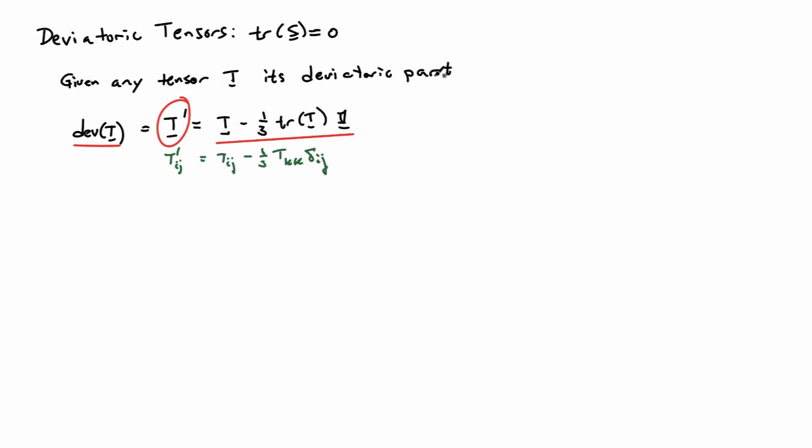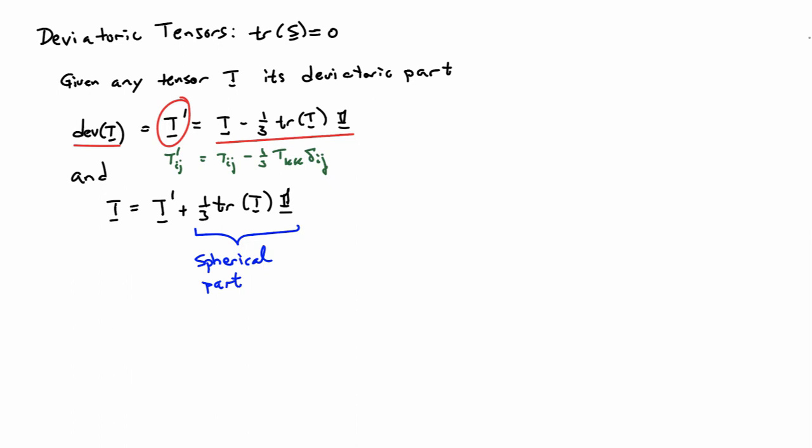Rearranging, any tensor T can be written as its deviatoric part plus one-third times the trace of T times the identity. This is called the additive decomposition of a tensor into its deviatoric part and its spherical part, and it is always possible for any tensor.